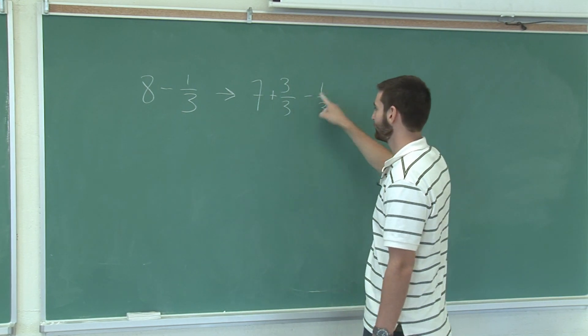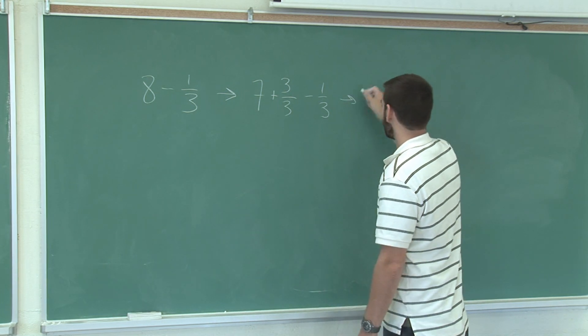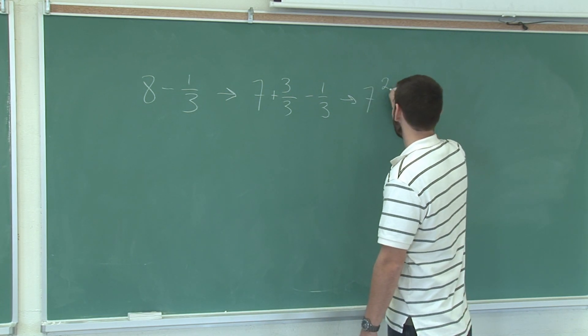So 3 thirds minus 1 third is 2 thirds. So we're left with 7 and 2 thirds.